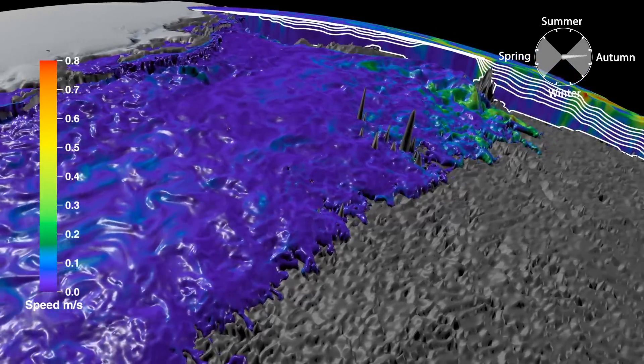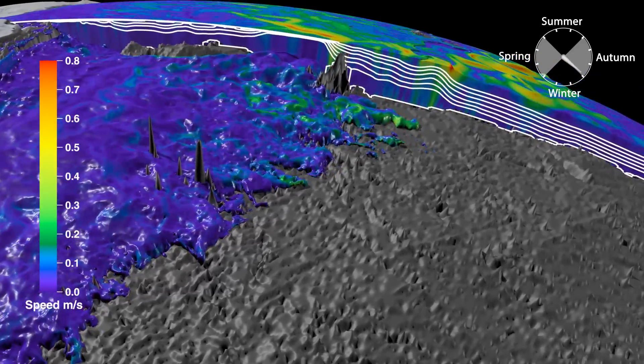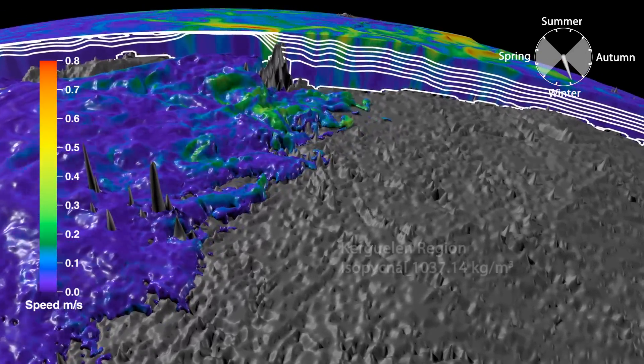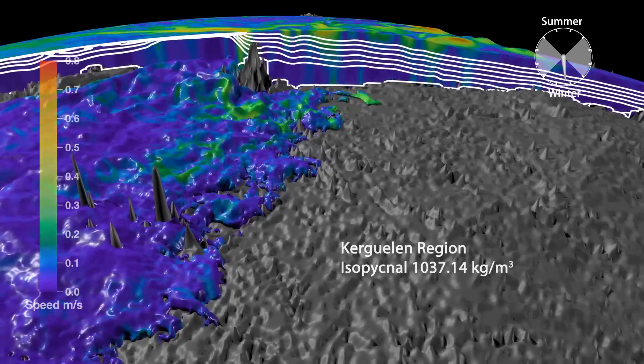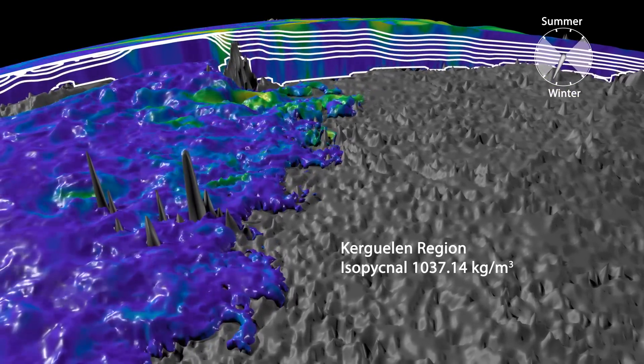The energy from circulating flow structures such as eddies and vortices plays an important role in maintaining the broader dynamics of Southern Ocean circulation.